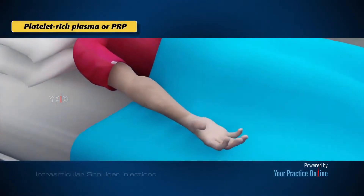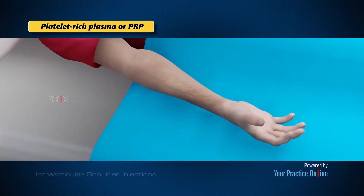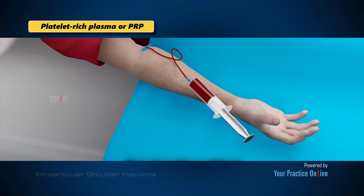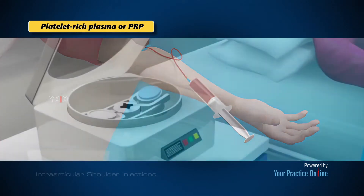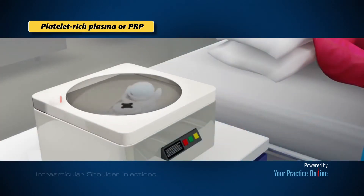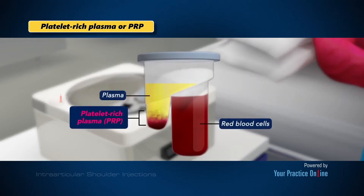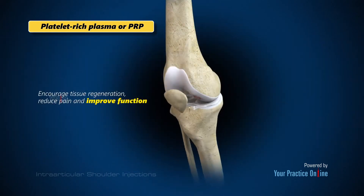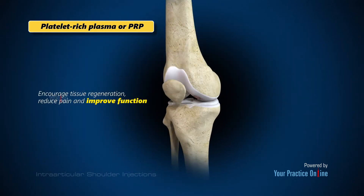Platelet-rich plasma, or PRP, is obtained from your blood and may be used in an intra-articular injection of the knee joint to encourage tissue regeneration, reduce pain, and improve function.